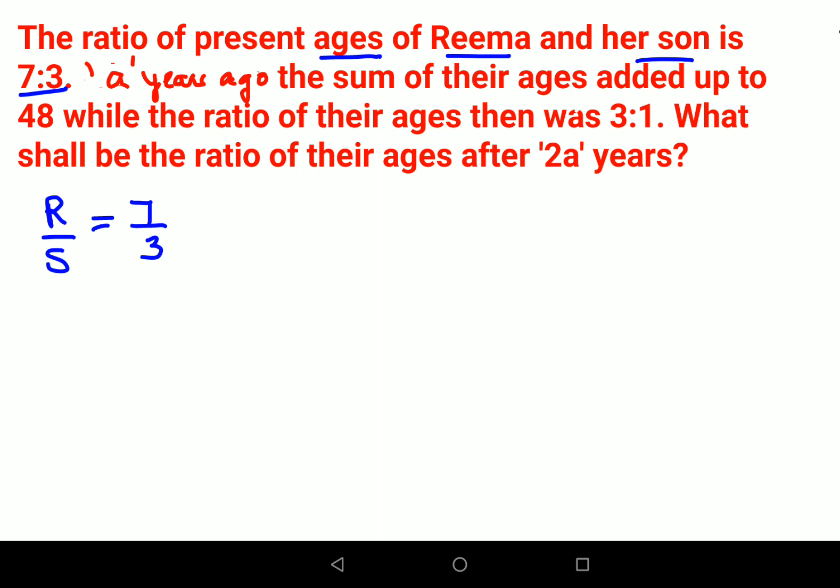Then they are saying A years ago, the sum of their ages added up to 48, means R minus A plus S minus A equals to 48. Now they have told the ratio of their ages then, so that means R minus A upon S minus A equals to 3 upon 1. So I can write it as 3. So from here, I can say R minus A is equals to 3 times S minus A.